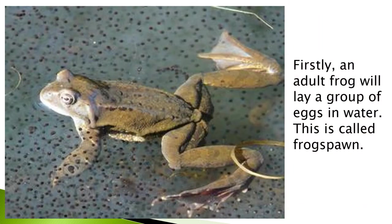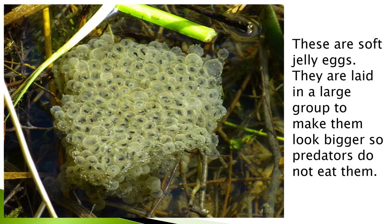Firstly, an adult frog will lay a group of eggs in the water. This is called frog spawn. These are soft jelly eggs. They are laid in large groups to make them look bigger so predators do not eat them.